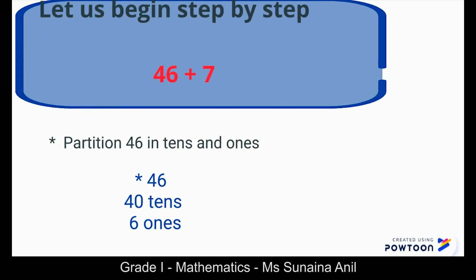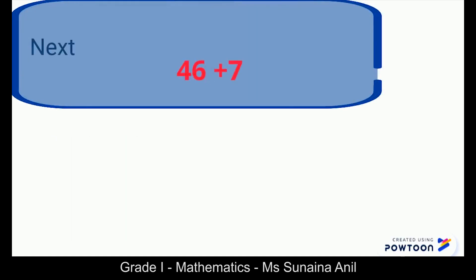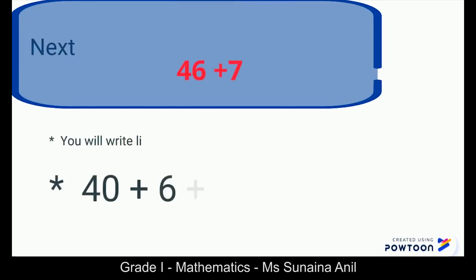First of all we will solve 46 plus 7. Partition 46 in tens and ones. Now we have got 40 tens and 6 ones. Next write it like this: 40 plus 6 plus 7.